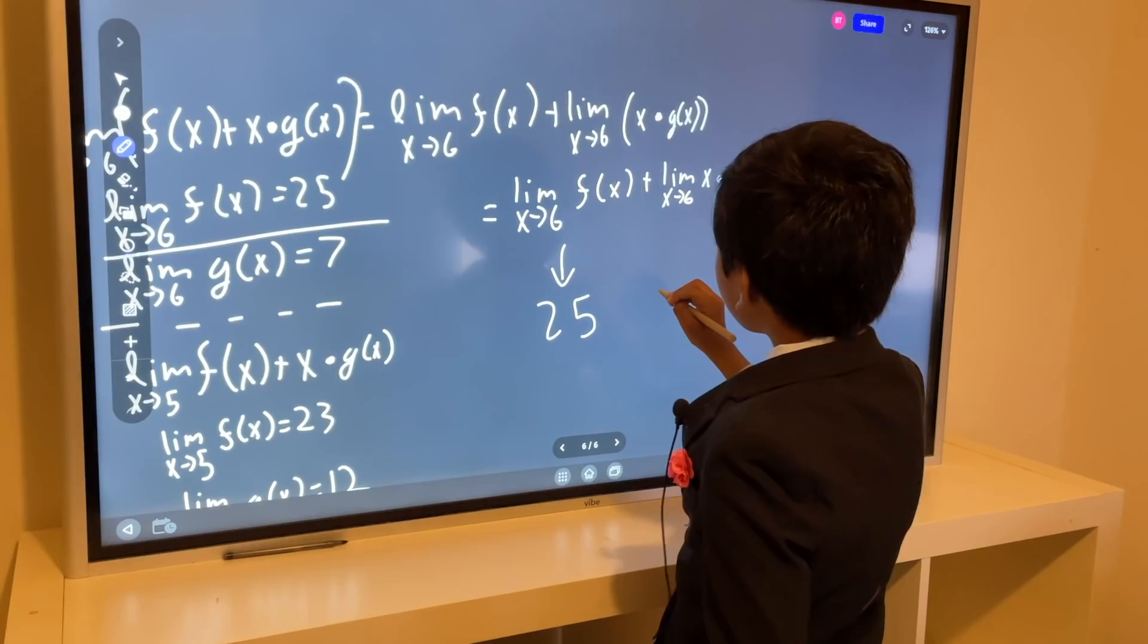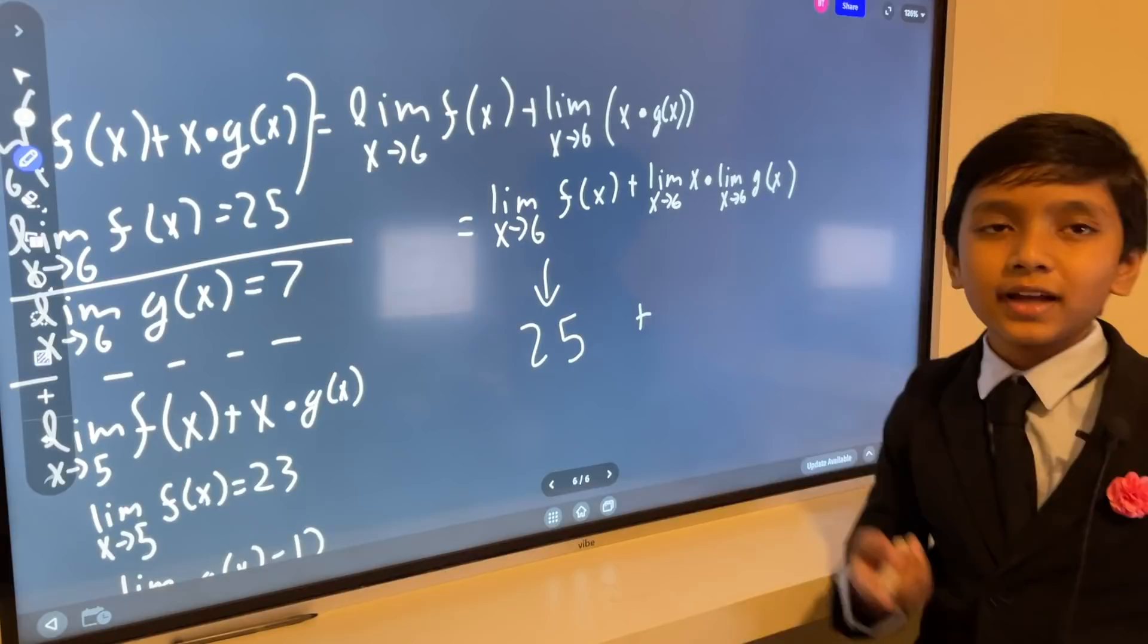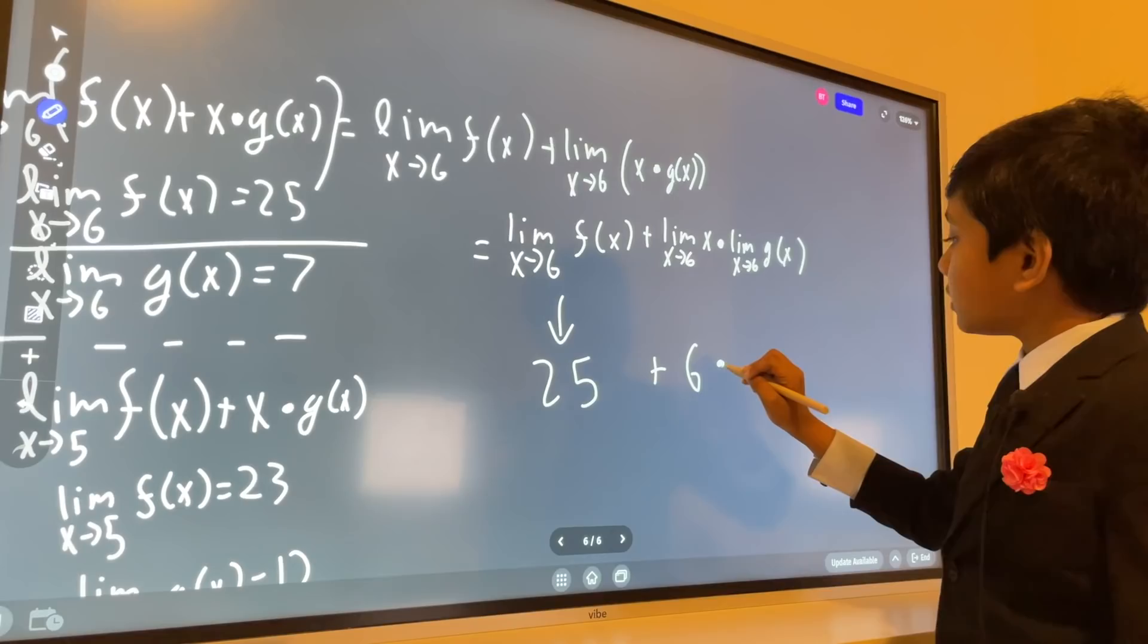Bring down the plus. Then what is the limit as x approaches 6 of x, where x is approaching 6? So, 6. And then we multiply that by the limit as x approaches 6 of g(x).